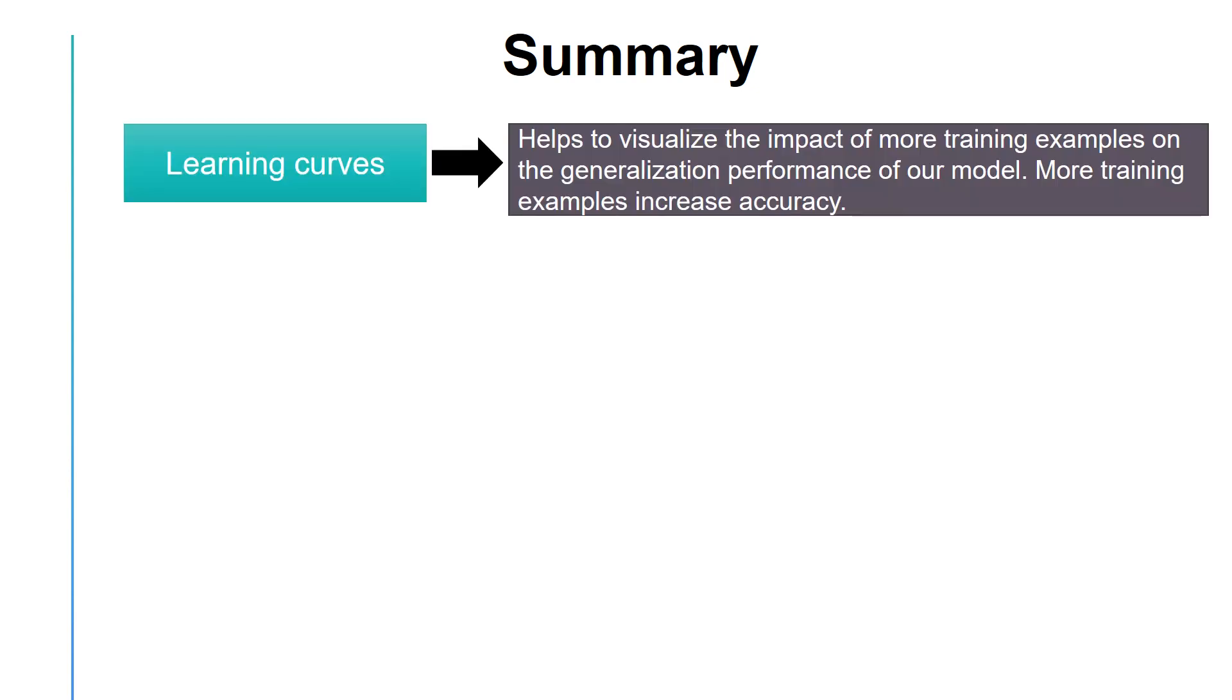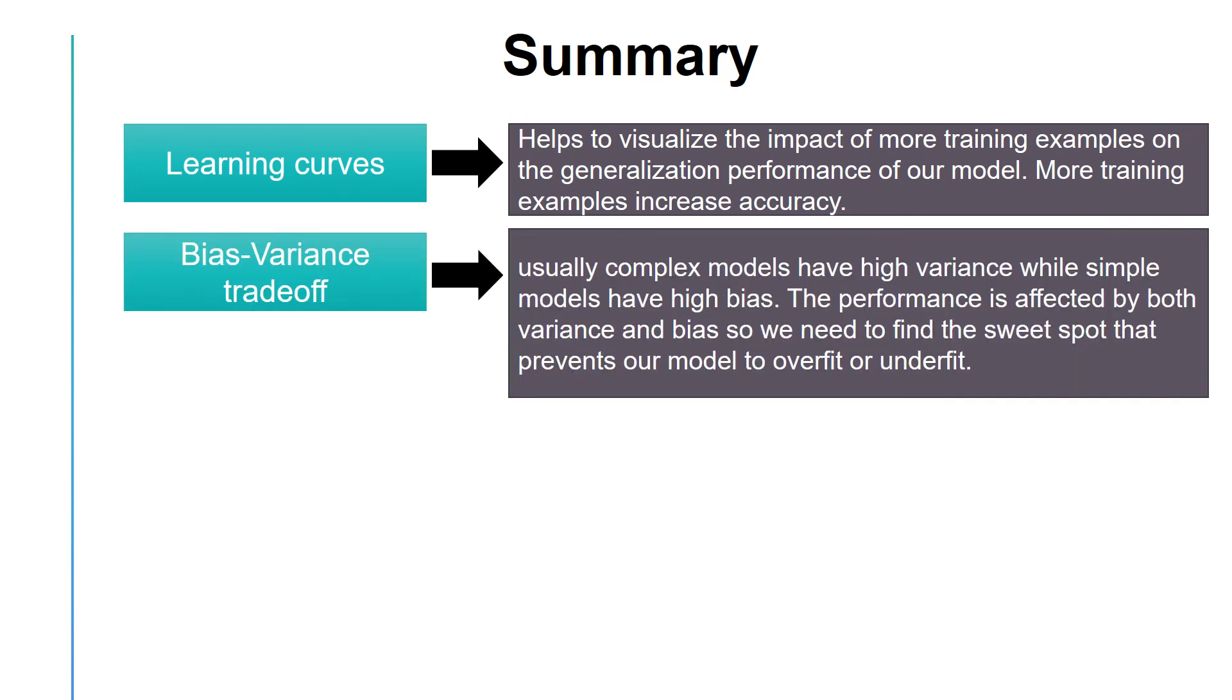In summary, in this video, we discussed learning curves, which are useful for visualizing the impact of the amount of training data on the performance of our model. When we have more training data, it is less likely that we select the wrong function by chance. We talked about bias variance trade-off and discussed that complex models tend to have high variance, which usually results in overfitting.